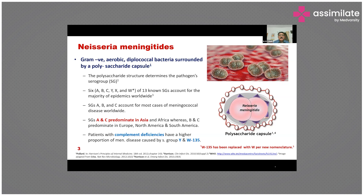There are 13 serogroups known, out of which 6 — A, B, C, Y, X, and W — account for the majority of epidemics worldwide. Serogroup W was previously known as W135 but is now shortened to serogroup W.